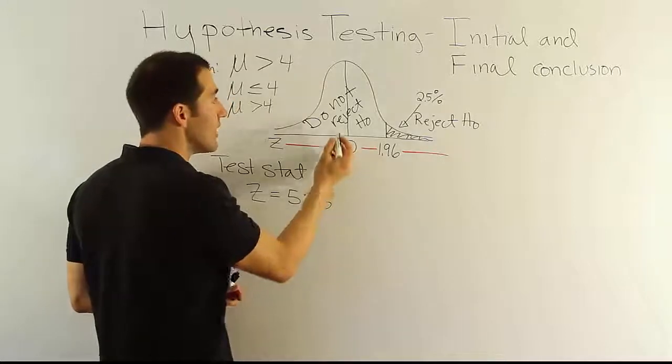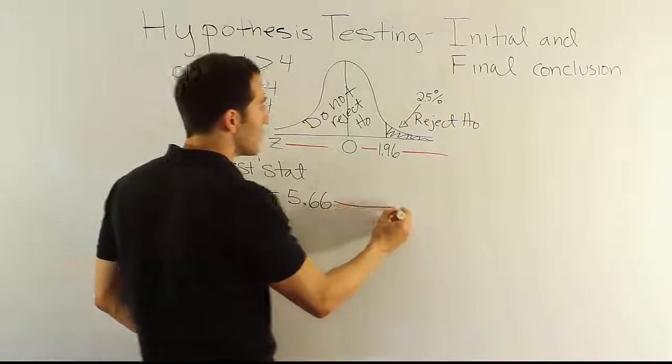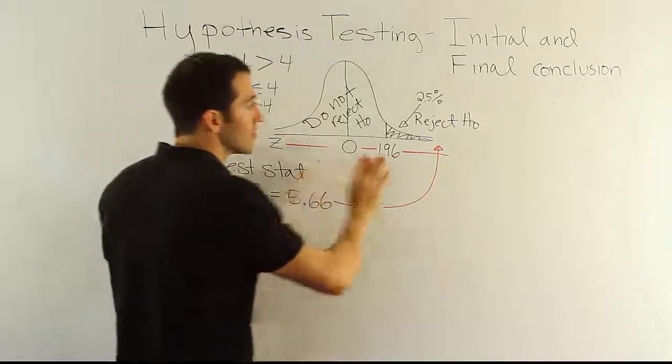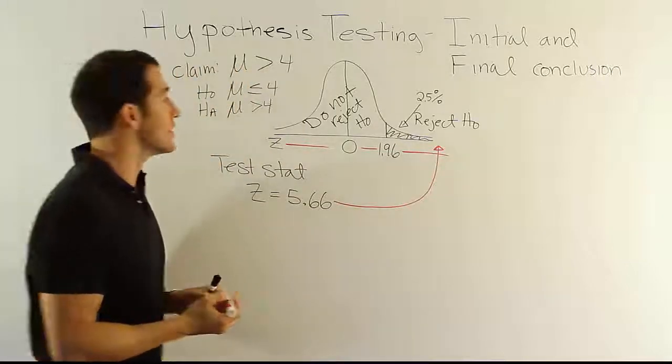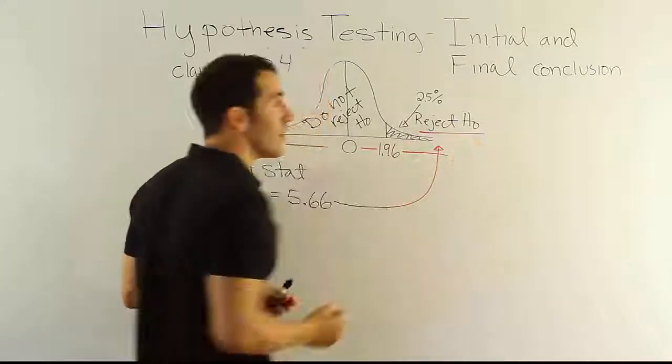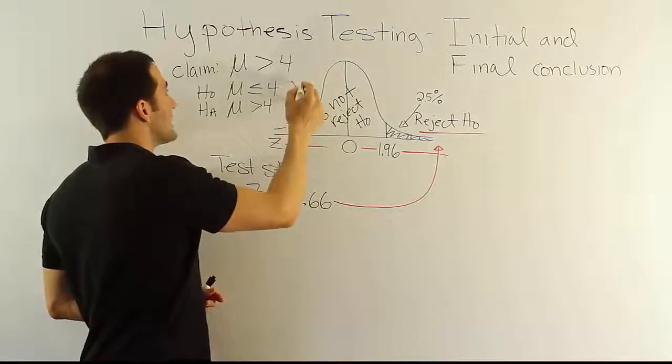Should it land to the left, we do not reject H0. Of course, you can see that this value clearly lands over here. 5.66 is way down there on the number line. So it's definitely in the category where we would reject H0. So that is our initial conclusion. We're going to say essentially, reject H0.